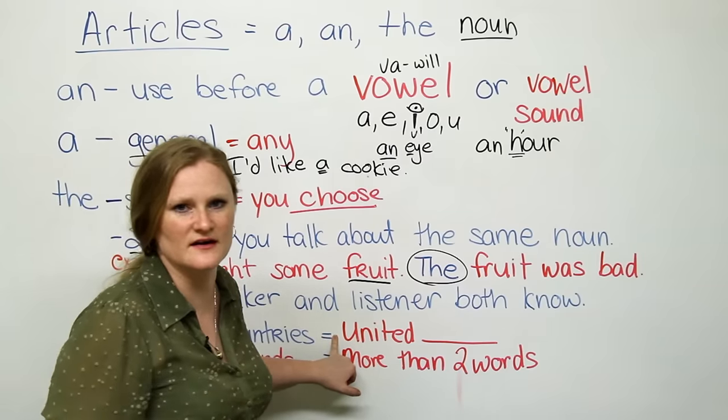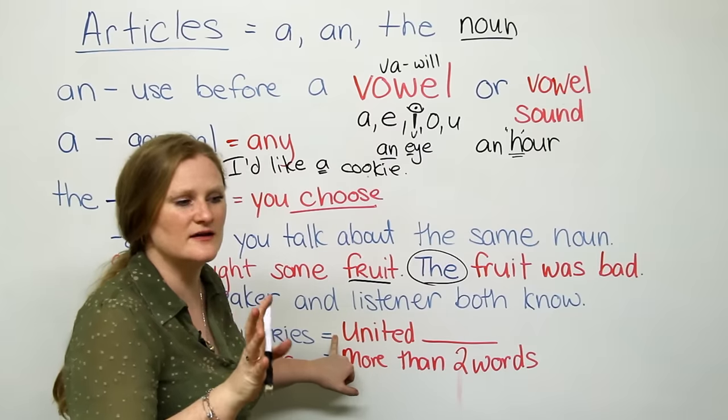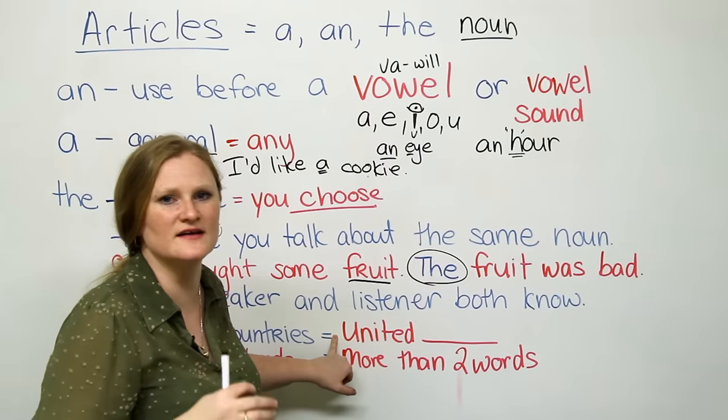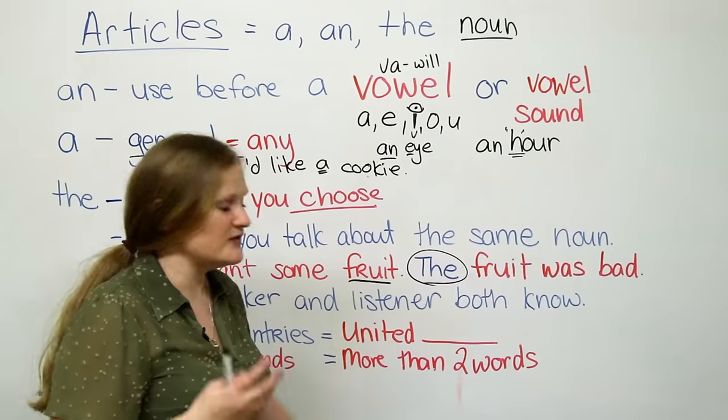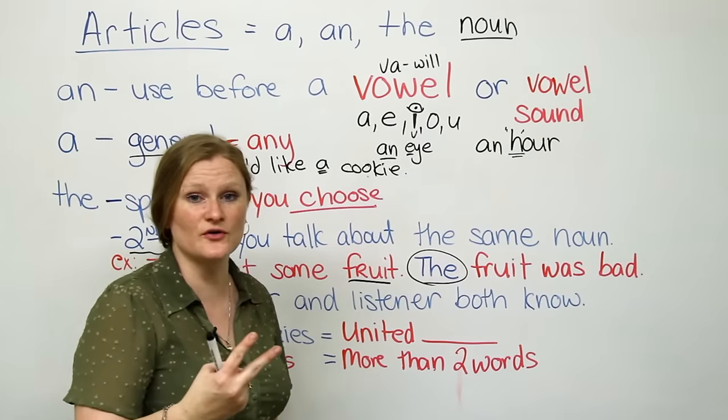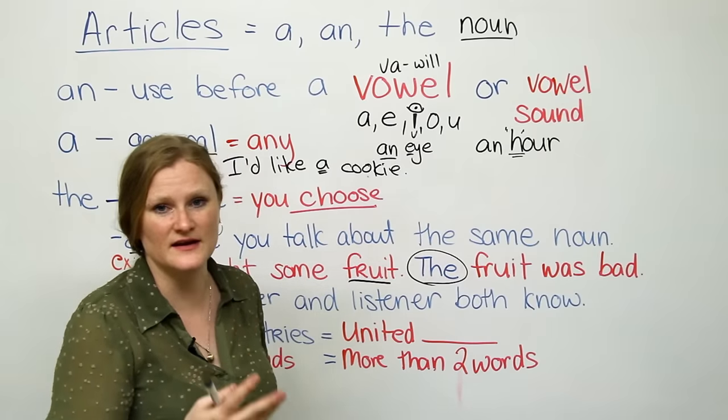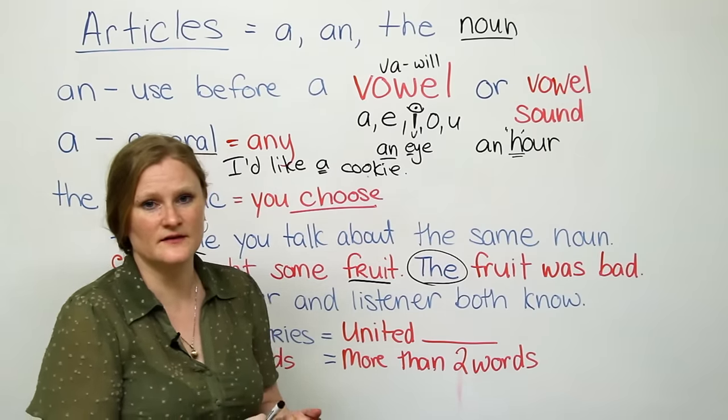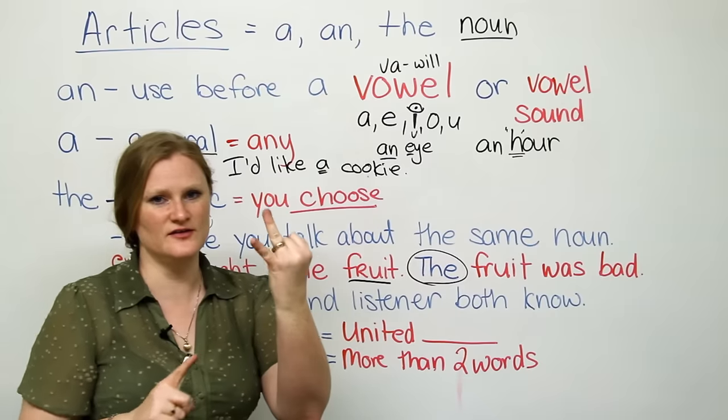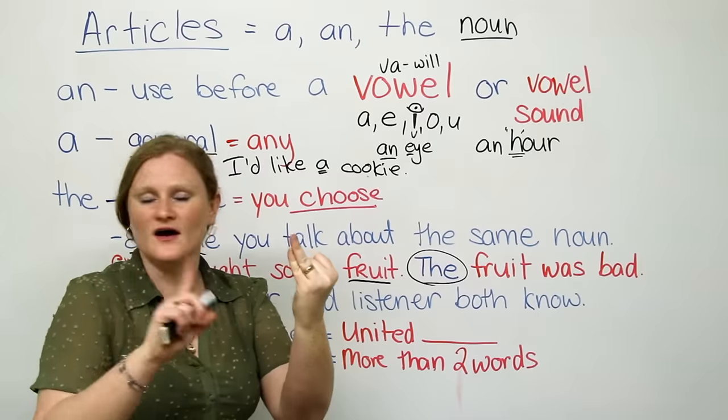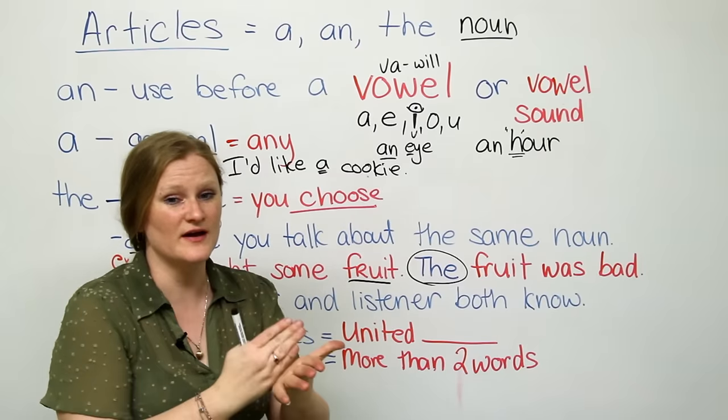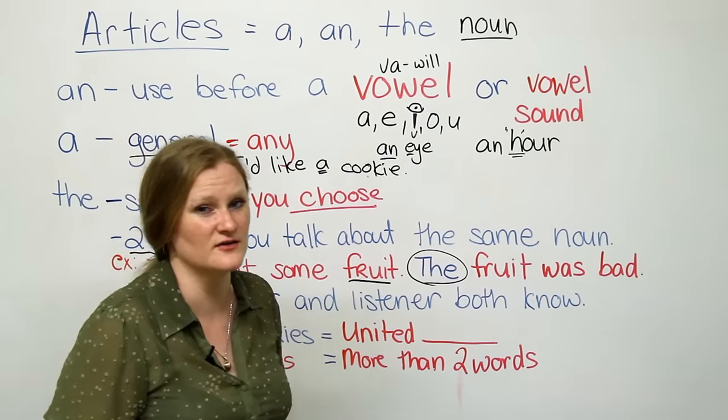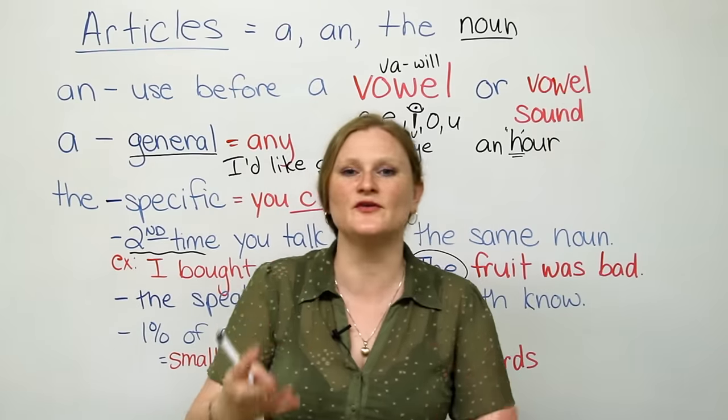I do not say the Canada. I do not say the Japan. If the word has united in it, I say the. The second one is if the country has more than two words in the name, you're going to say the. For example, New Zealand. New Zealand only has two words. I do not say the New Zealand. If it has more than two words, I have to put the in front of the country. The last one is the most difficult.